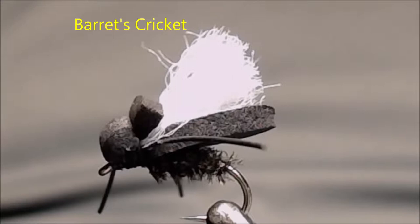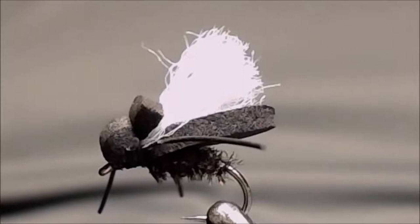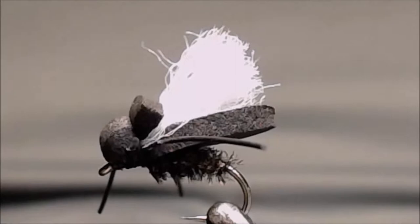Bearage Cricket is a pattern that was given to me by a guide on the Clarks Fork of the Yellowstone when we were fishing there. It's an excellent pattern to represent crickets, but it also looks enough like a beetle that you can use it as a beetle pattern.